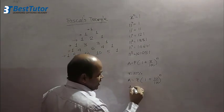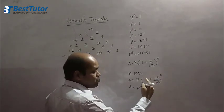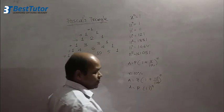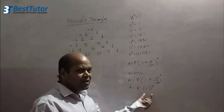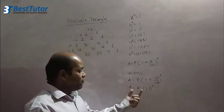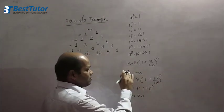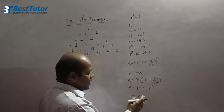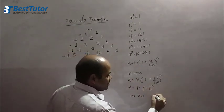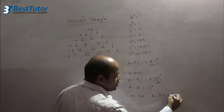When you simplify that, if I take R as 10 percent, it becomes P into 1 plus 10 by 100 raised to N. When you simplify that, it becomes 1.1 raised to N. 1.1 is 11 divided by 10. So how would I solve this? Let's say if N was given as 2 years, the money is invested at 10 percent for 2 years time.